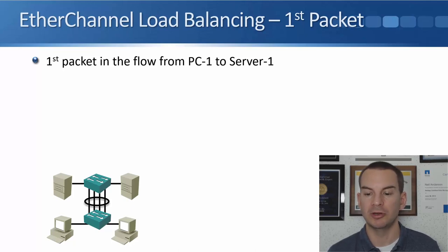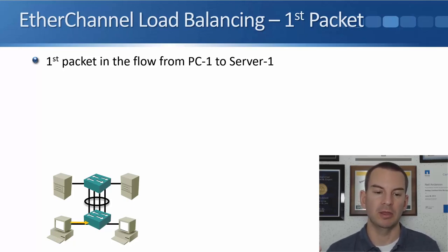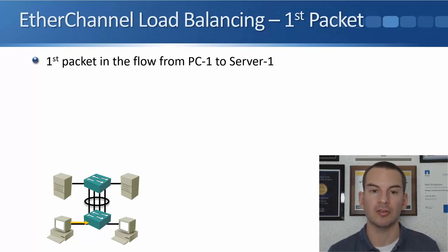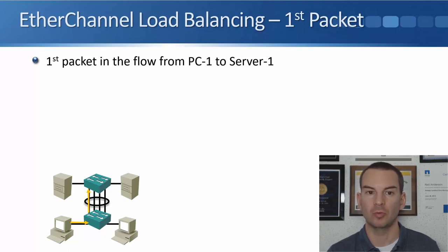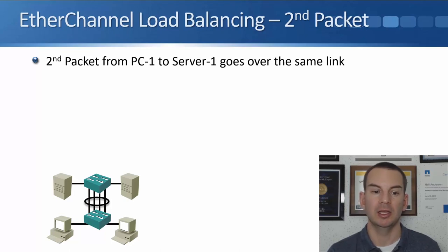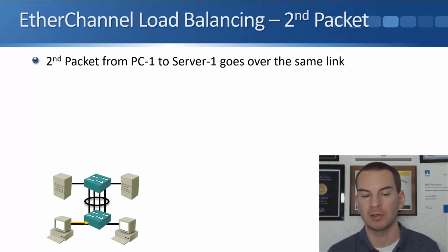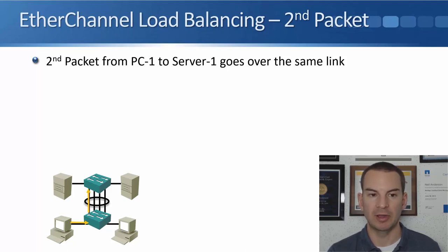Looking at this with an animation: the first packet in the flow from PC1 to Server 1 hits the first switch, which decides which interface to load balance it over — it chooses GigabitEthernet 0/1 — and the packet goes to the server. The next packet in the same flow also goes over that same interface.